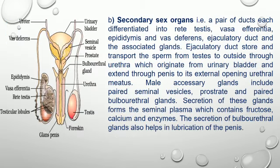The secondary sex organs are a pair of ducts differentiated into rete testes, vasa efferentia, epididymis, and vas deferens, ejaculatory ducts, and associated glands. Each ejaculatory duct stores and transports the sperm from the testes to the outside via the urethra, which originates from the urinary bladder and extends through the penis to its external opening, the urethral meatus.